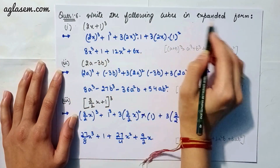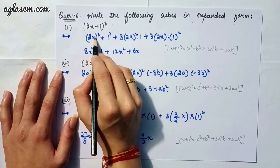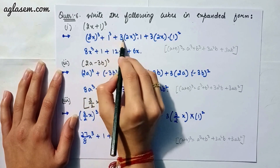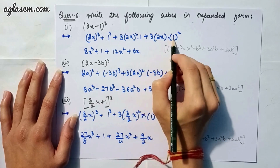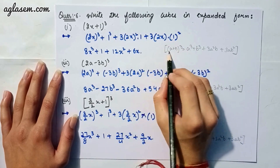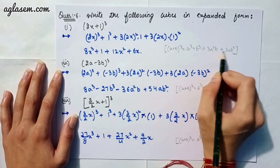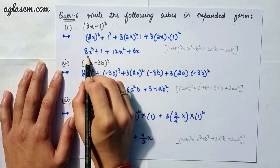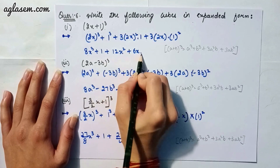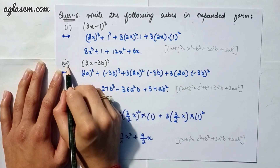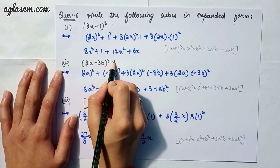Moving to our sixth question: write the following cubes in expanded form. Part 1 says (2x + 1)³. Applying the identity (a + b)³ = a³ + b³ + 3a²b + 3ab², we get 8x³ + 1 + 12x² + 6x.